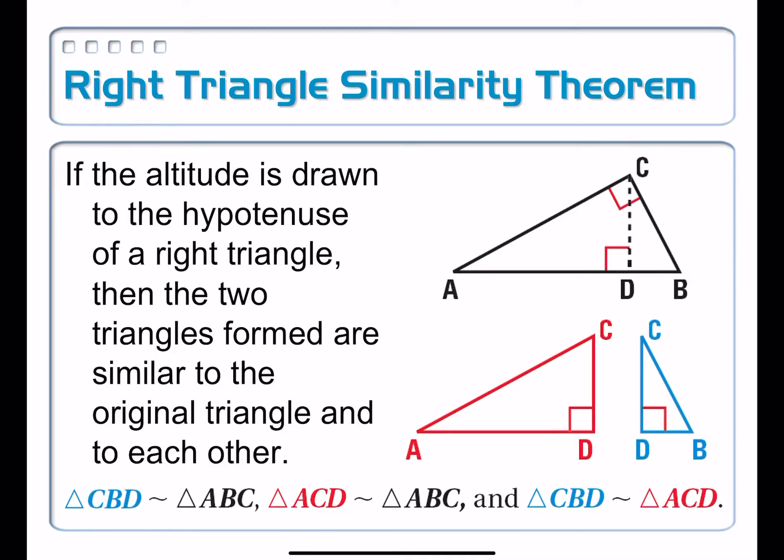If we're able to match up angles, so for example here, angle A on this right triangle on the original one matches up with the medium-sized angle A right here, and they both have right angles, so they must be similar by angle-angle.